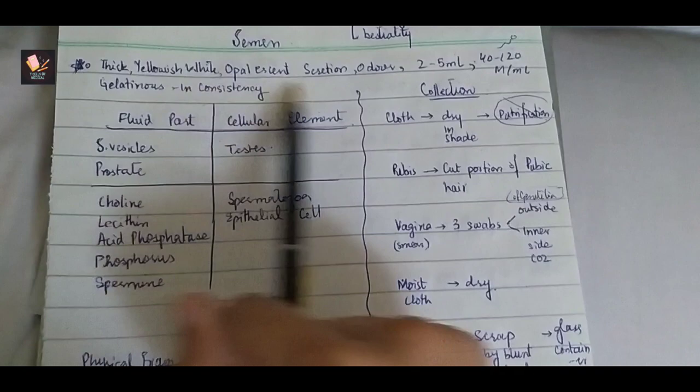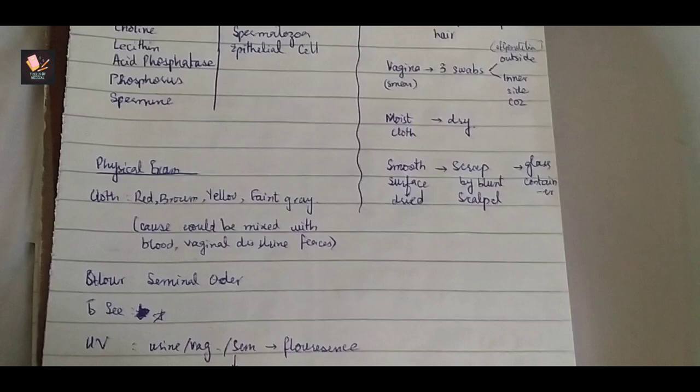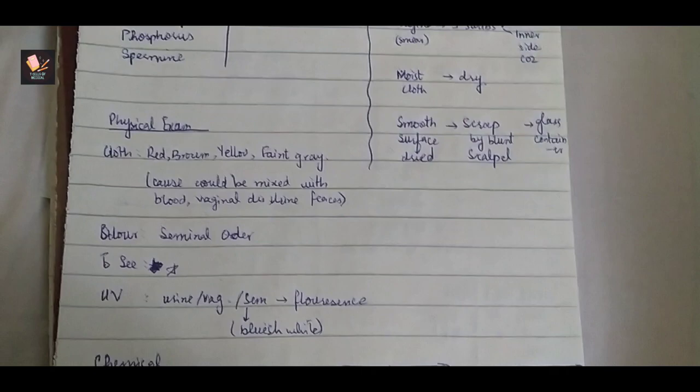This is what we have done in the physical examination. If it is on cloth, then it can be different like faint gray, yellow, red, brown, because blood, vaginal secretion and feces can be mixed. There are specific seminal odor, and we have bluish white light fluorescence.